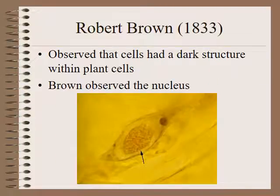In the 1800s, another gentleman named Robert Brown observed that cells had a weird dark structure within them, especially within plant cells. Basically, he was the first to observe in detail the nucleus of a cell.